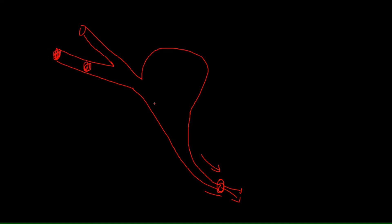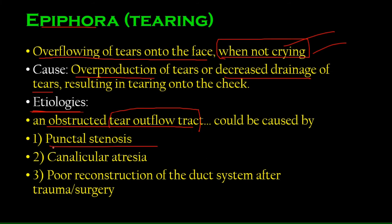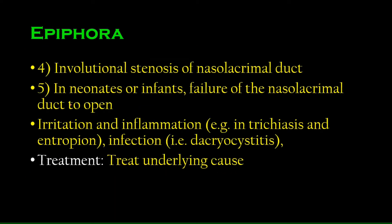Then we have the lacrimal sac, and then the nasolacrimal sac ends at the nasolacrimal duct, from which tears go into the nasal cavity. Block any of these — the puncti, the canaliculi, or the nasolacrimal duct — and you stop the flow of tears. Punctal stenosis, canalicular atresia, and involutional stenosis of the nasolacrimal duct would all result in epiphora.